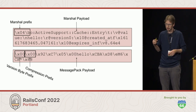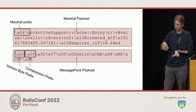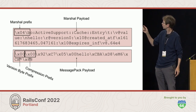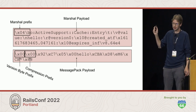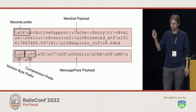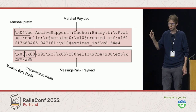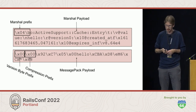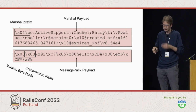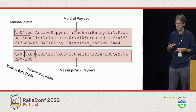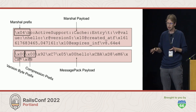Looking at the original payload: Marshall payload versus MessagePack payload. You can see ActiveSupport::Cache::Entry in the Marshall payload — that's Rails 6; Rails 7 would be more compact thanks to Jean Boussier's work. You can see the version byte prefix is 00, and there's also a compression prefix because we conditionally compressed using Snappy. The MessagePack payload is dramatically shorter.